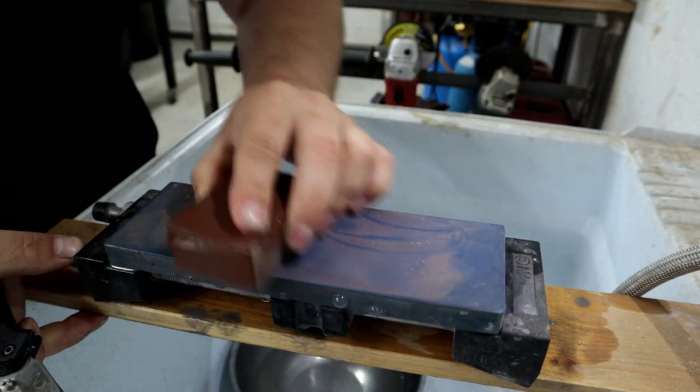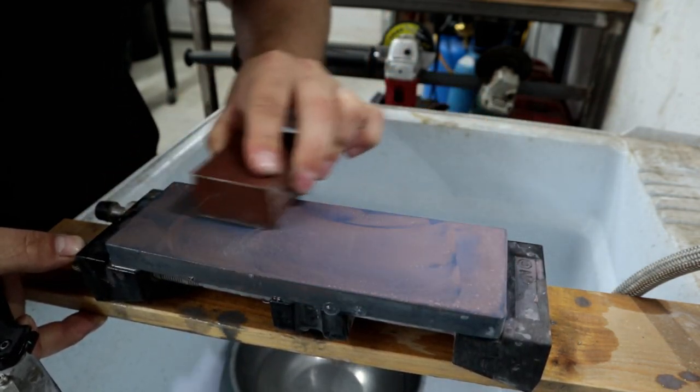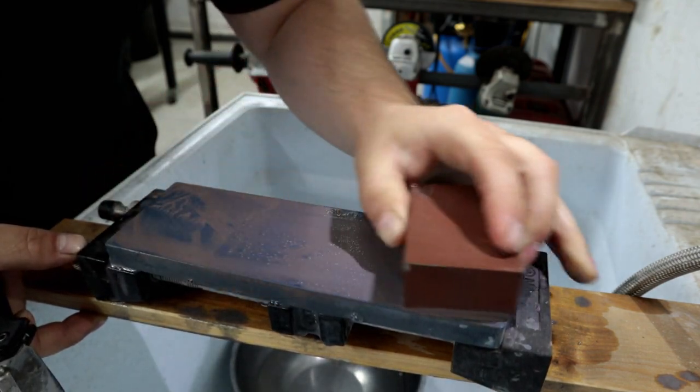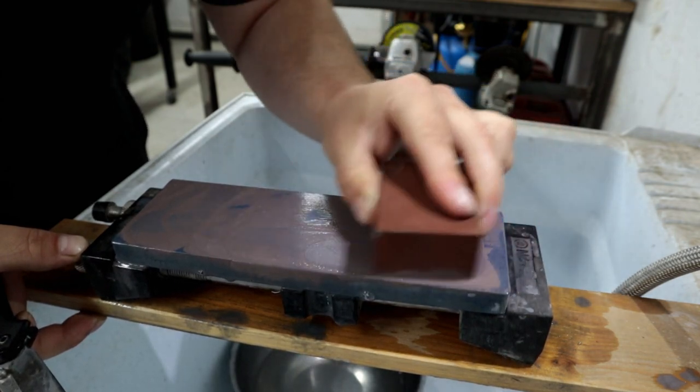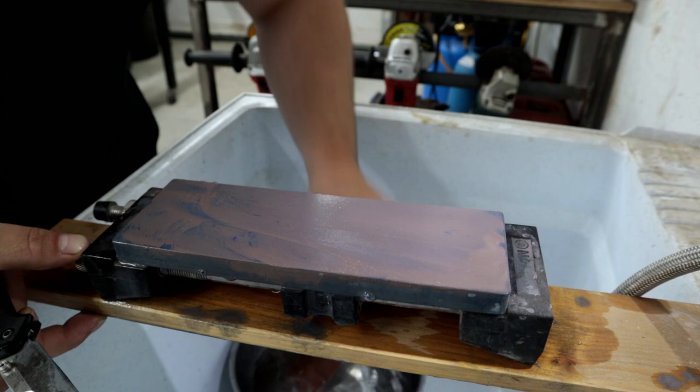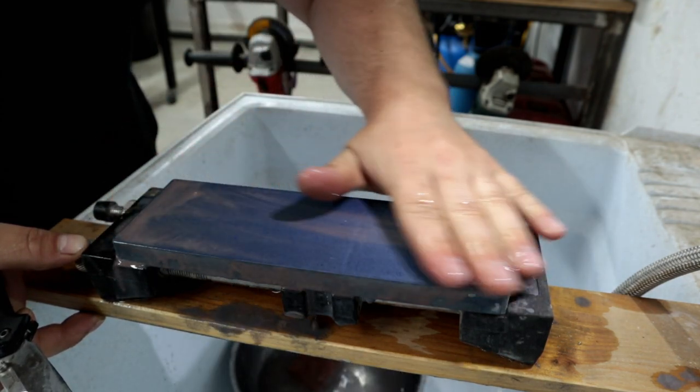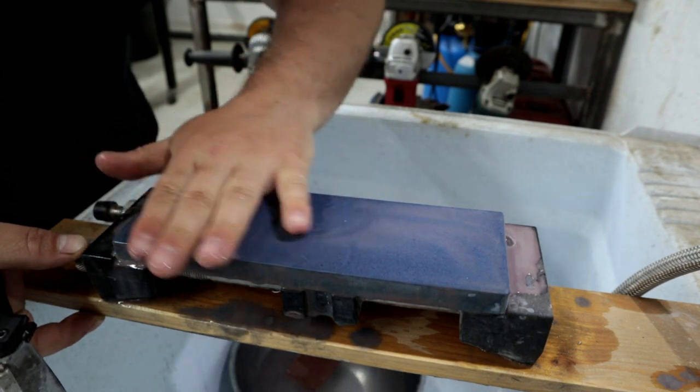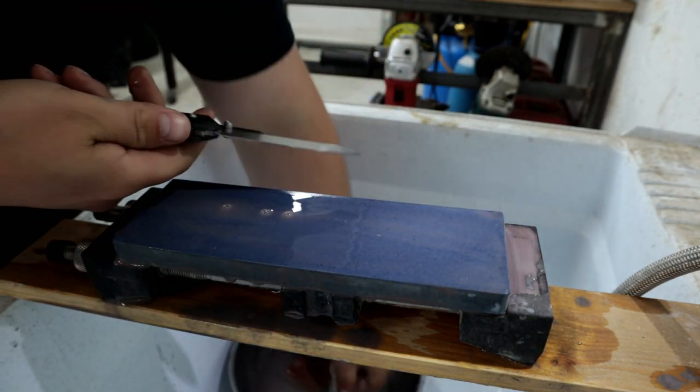And then a lot of 600 grit nagura or dressing stone as they call it. You can get these stones on paulsfinest.com by the way, that's where these came from. These dressing stones are great, if you don't have one, great addition to your sharpening kit. Look at that nice fresh surface, lots of fresh cutting particle.